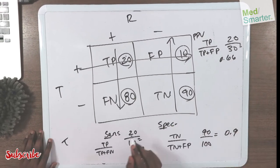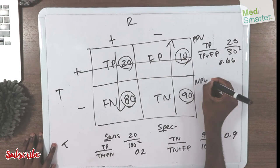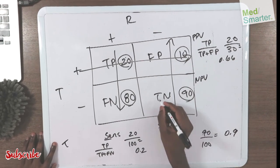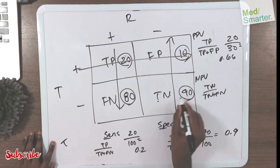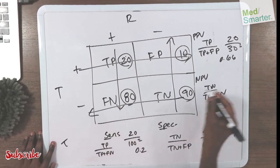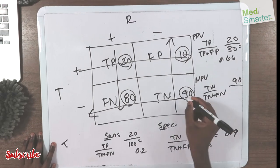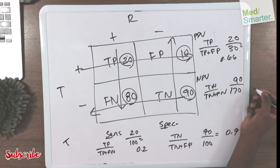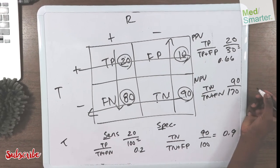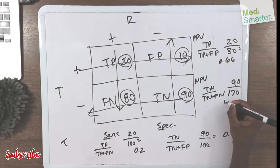Then for negative predictive value, again you start with the trues. True negative divided by true negative plus false negative, goes straight across horizontal. 90 divided by 90 plus 80 is 170, which is about 0.53.